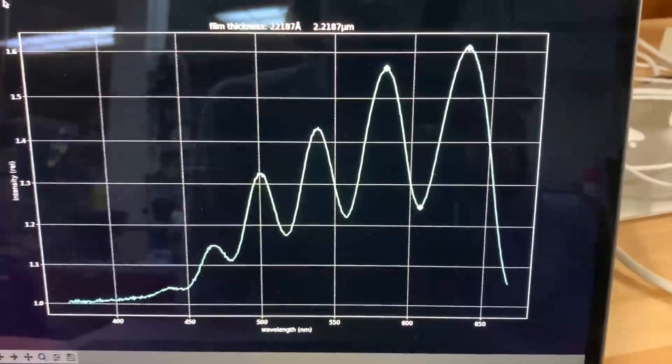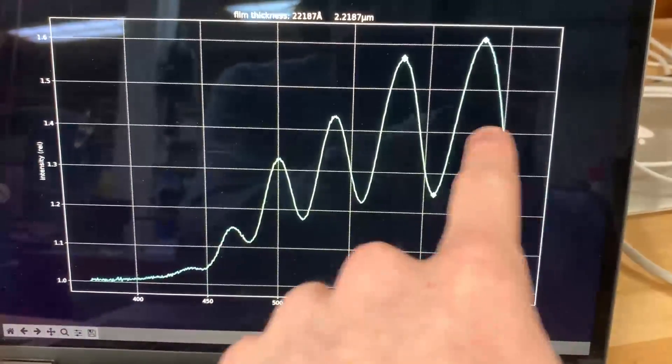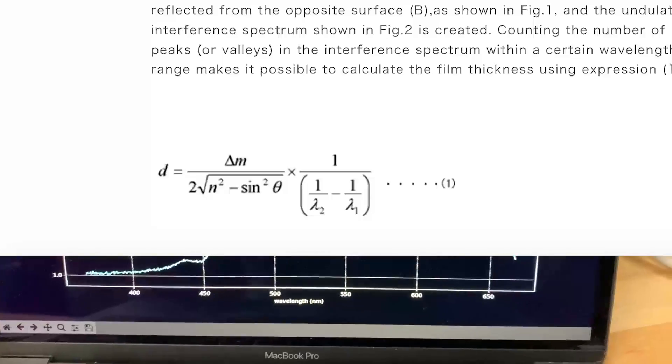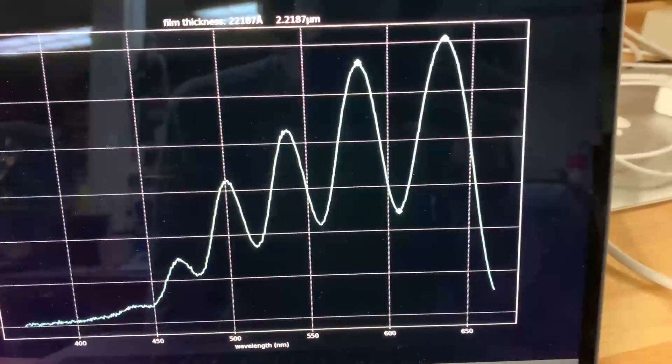When you know the period of this kind of sinusoid here then you plug it into this formula and you magically get the thickness out if you know the refractive index of the material.